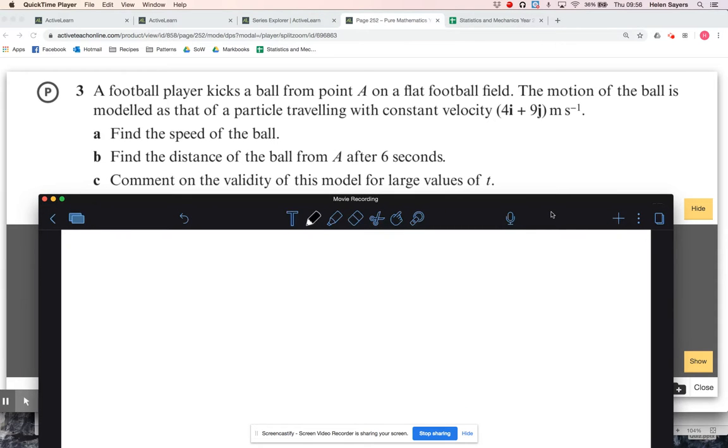The first thing we're asked for is the speed of the ball. Now that comes up quite a lot, often at the end of a longer question, and the speed is just the magnitude of the velocity. So the speed, I'm just going to use Pythagoras on the velocity vector, so 4 squared plus 9 squared, just to clarify why that is.